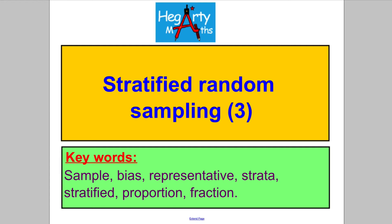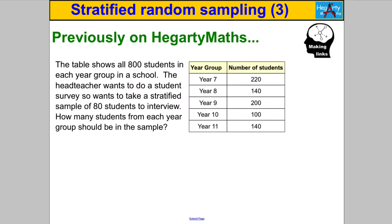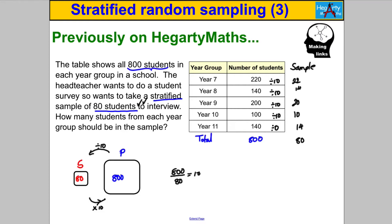Welcome to our third video on stratified random sampling. Let's start with something I expect you to know — this is the type of question we've done previously. The key idea was to draw a little picture: 80 in your sample, 800 in your population. The population is 10 times bigger, so moving from population to sample you divide by 10. We divided each value by 10 to get the sample numbers, which add to 80.